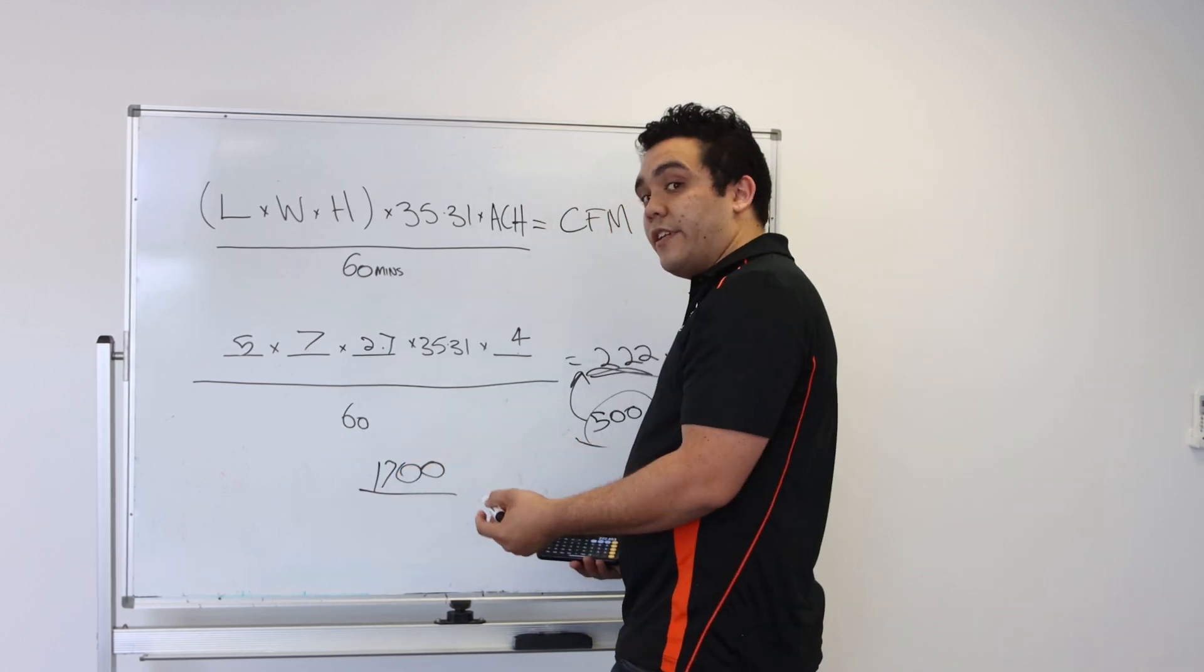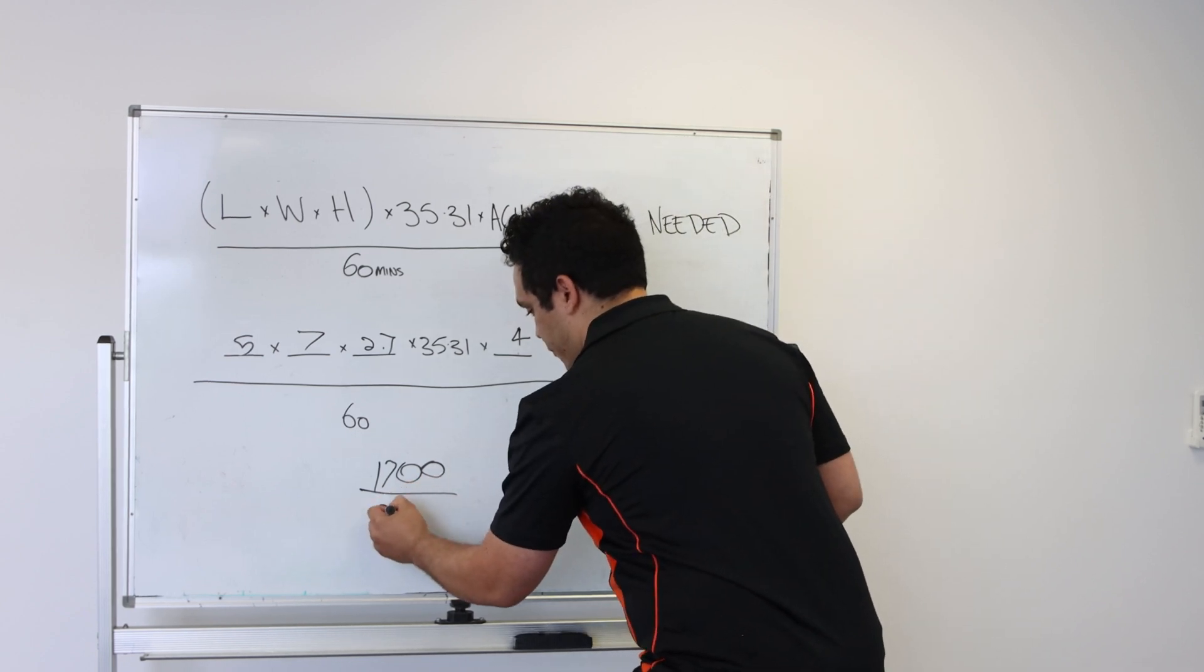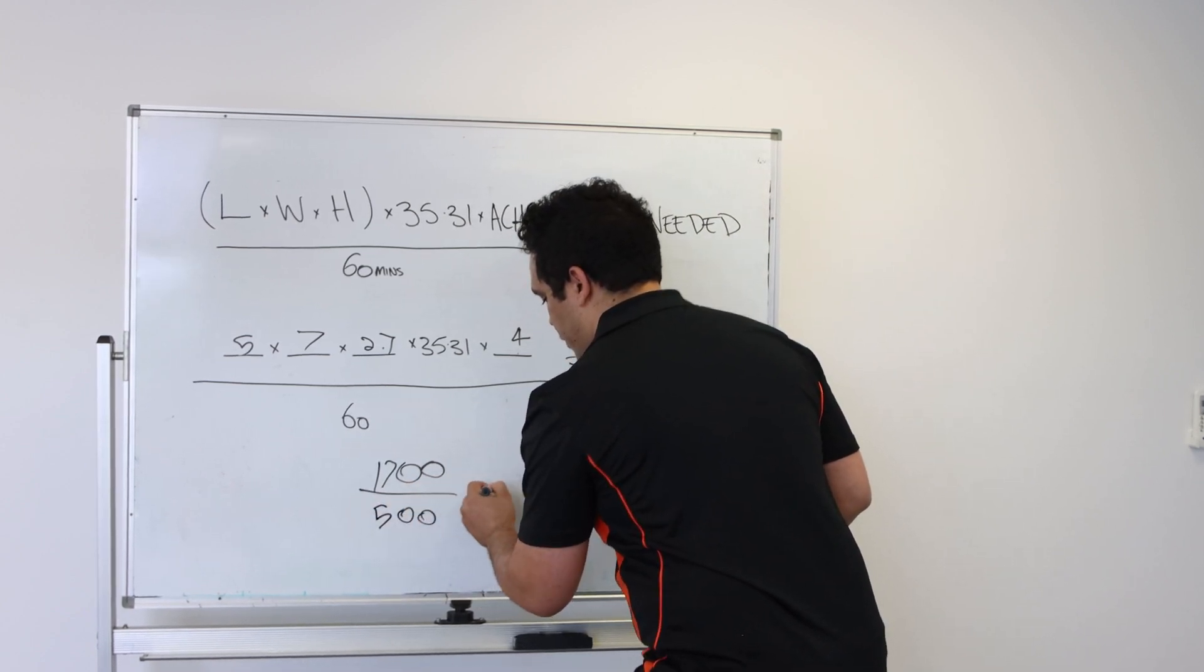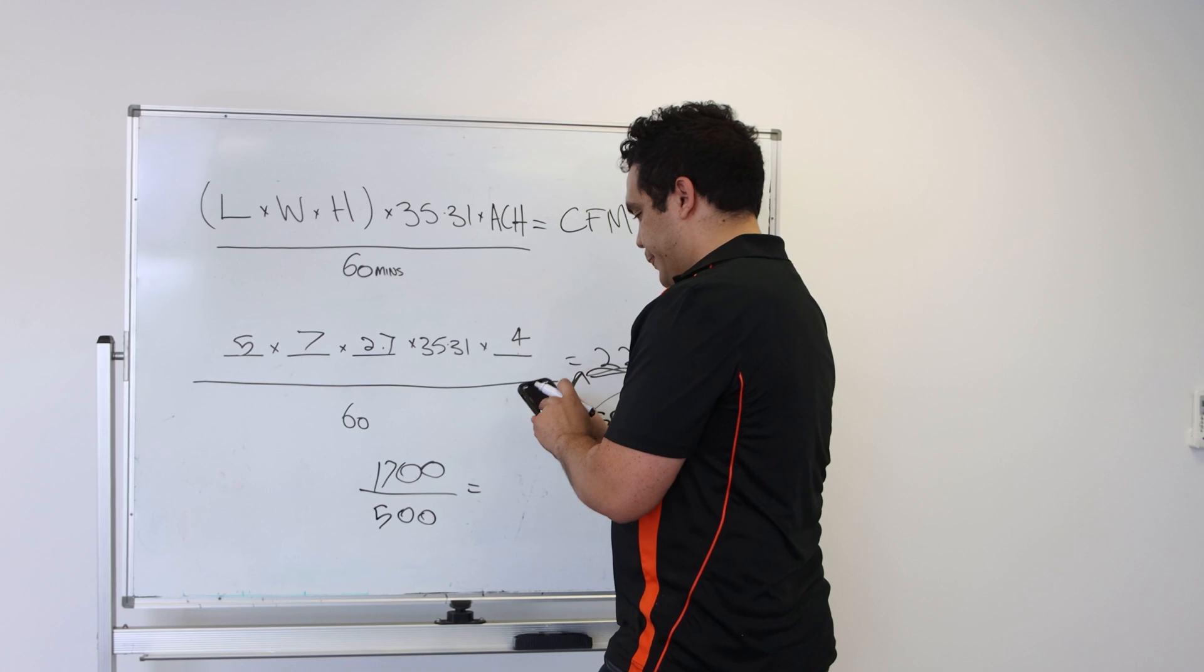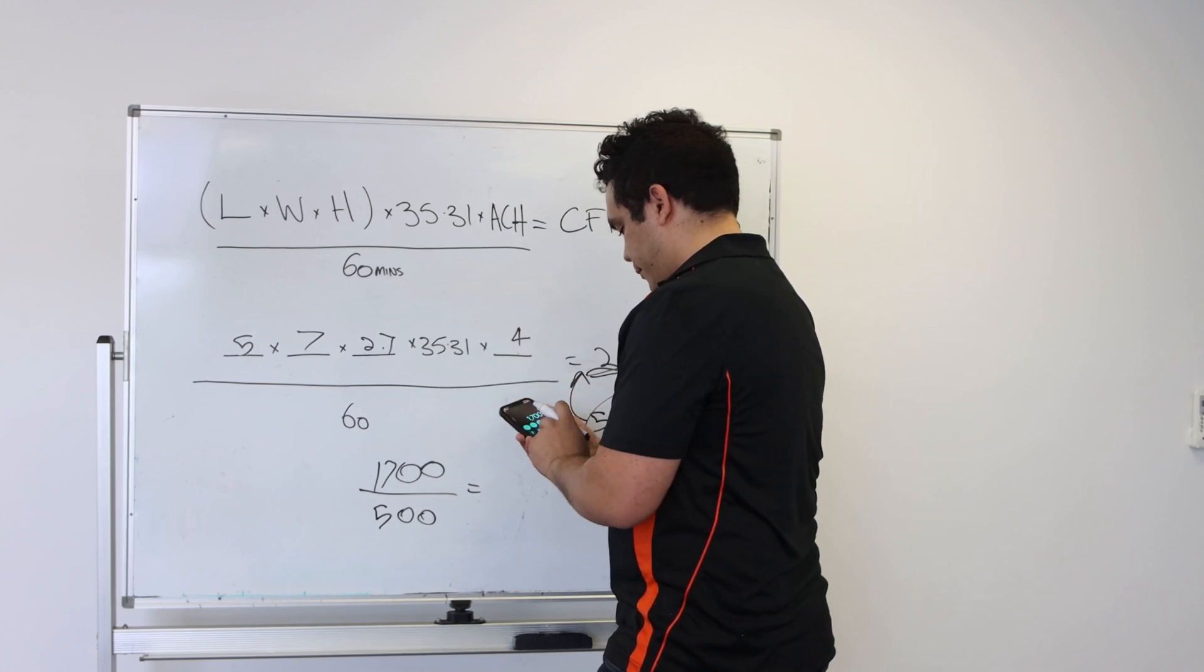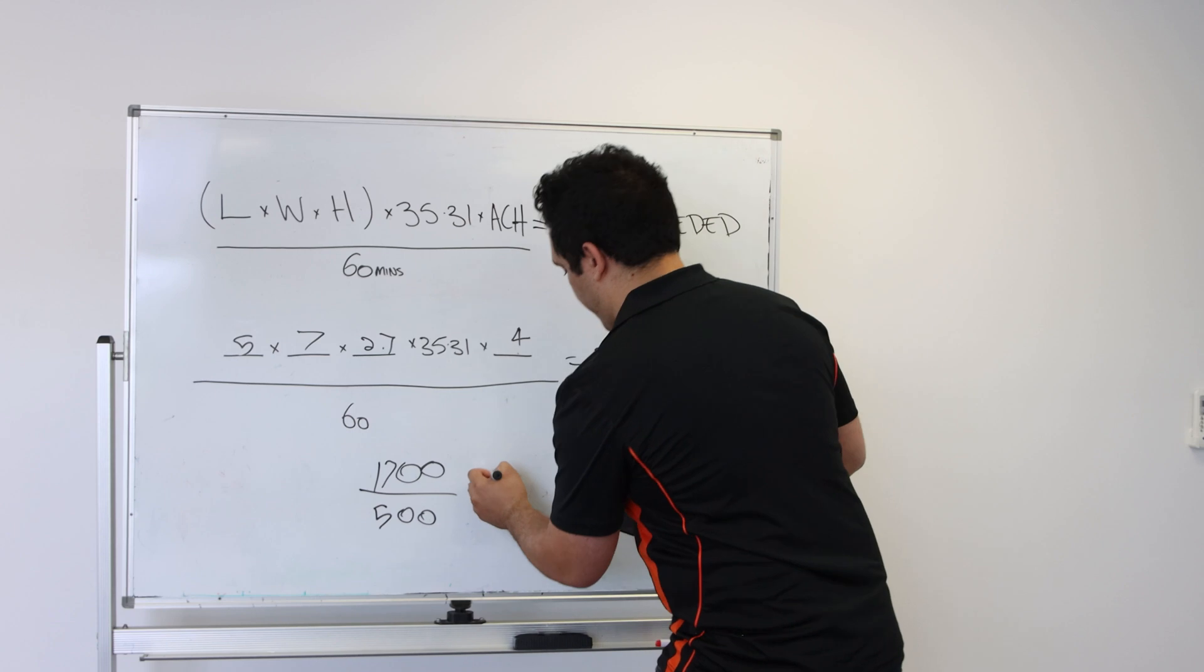you can just divide that 1700 by 500, which would equal 3.4.